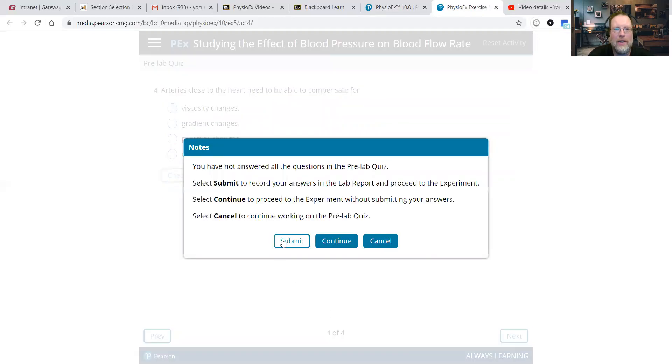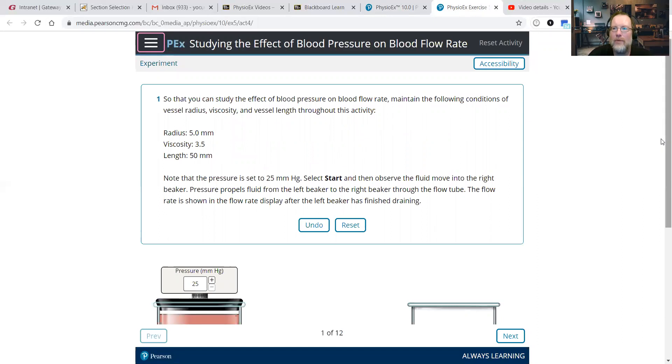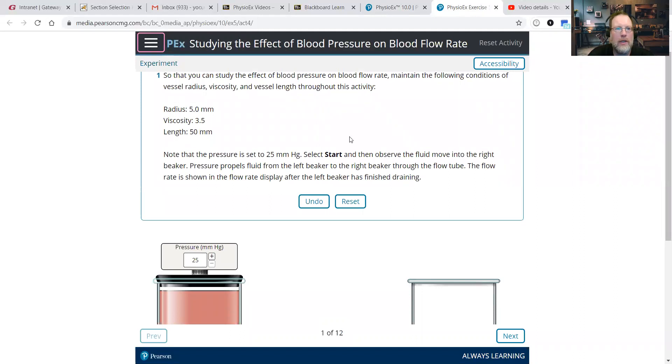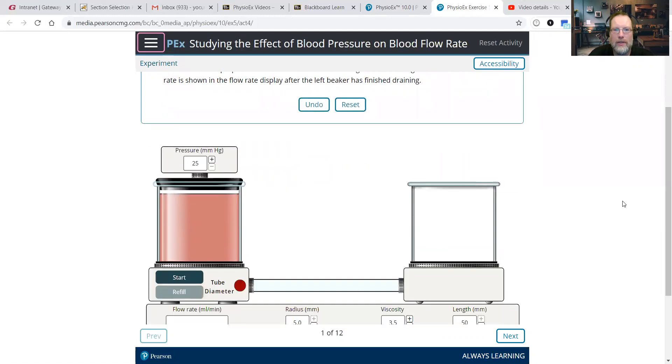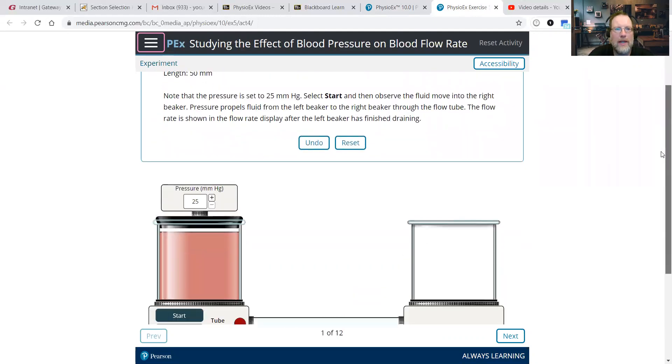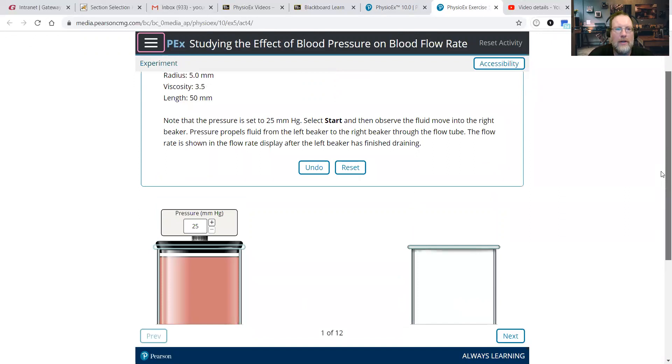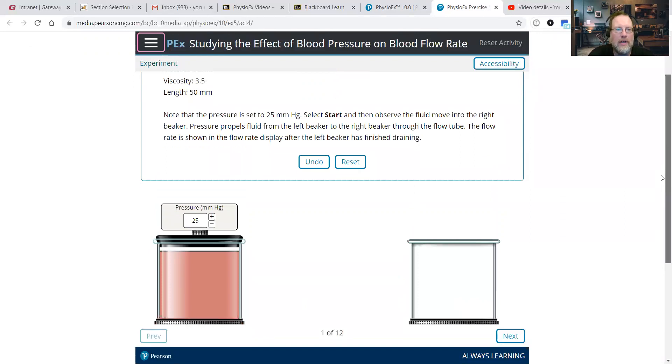So let's get right to it. There's the objectives you're going to want to read through, as well as answering some of those pre-lab questions. We're going to be altering blood pressure. At the top, radius, we're going to leave at 5 millimeters, viscosity at 3.5 and length at 50. These are going to remain our constants, and we're going to be altering pressure.